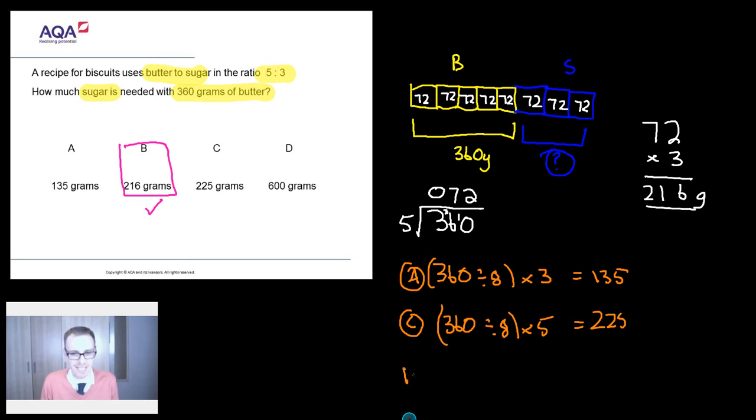And likewise for D, D's another one. D, I reckon they've done 360. But this time they divided it by 3 and times their answer by 5 and ended up with 600. But again, it's not the right thing to do. It's reading the question too quickly and not doing a diagram.